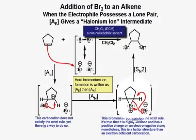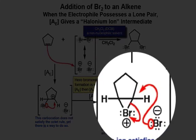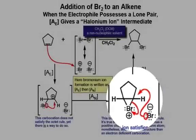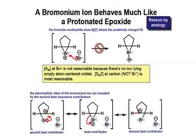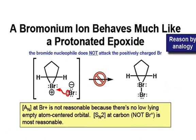Moving on to our SN2 step, why does the negatively charged bromine atom attack the carbon atom and not attack the positively charged bromine atom that's part of the bromonium ion intermediate? If we were to show the attack that way, it wouldn't make any sense. That bromine atom with a positive charge does not have a low-lying, empty atom-centered orbital, and based on the arrows provided, it would have to in order for this reaction to work.